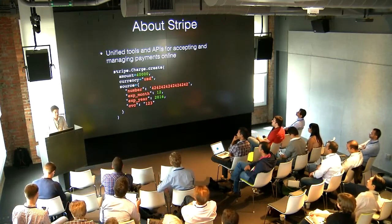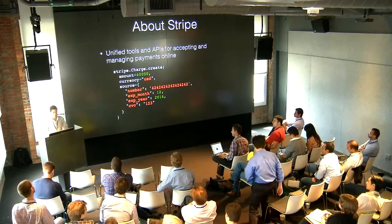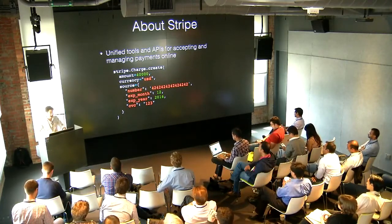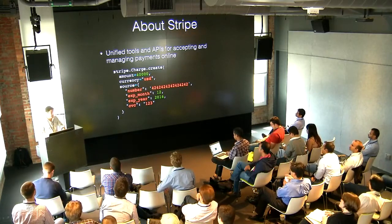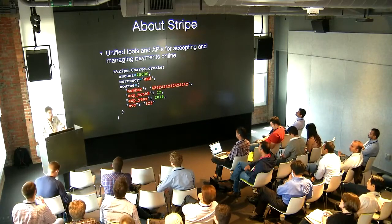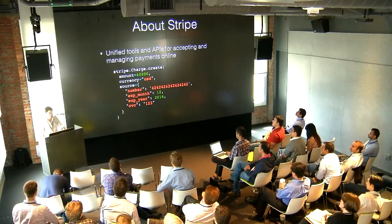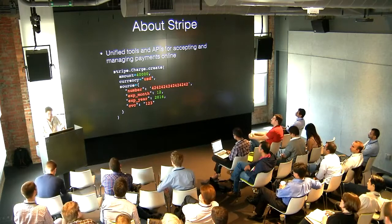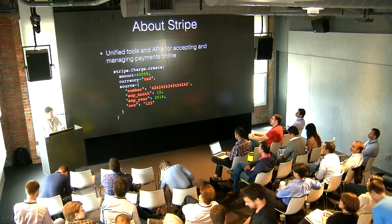Stripe is a company that provides a collection of unified APIs and tools for managing and taking payments. The thing that's important for today is the most basic primitive that we have in Stripe, which is just the ability to take a payment — a credit card payment. Here's a very simple Python code for charging a credit card. It actually exists; you can go do it yourself.